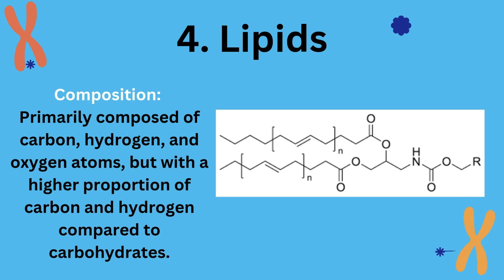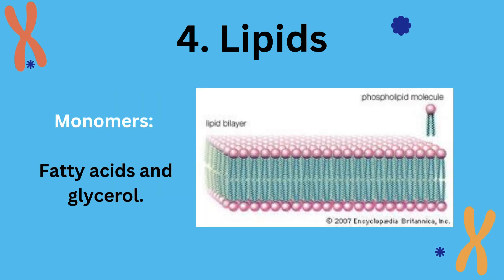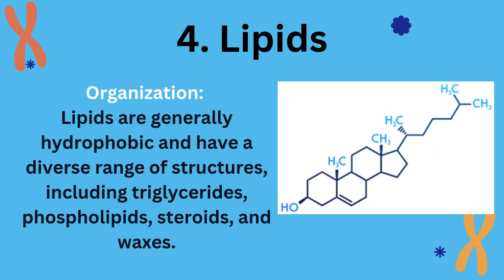4. Lipids. Composition: primarily composed of carbon, hydrogen, and oxygen atoms, but with a higher proportion of carbon and hydrogen compared to carbohydrates. Monomers: fatty acids and glycerol. Organization: lipids are generally hydrophobic and have a diverse range of structures, including triglycerides, phospholipids, steroids, and waxes.